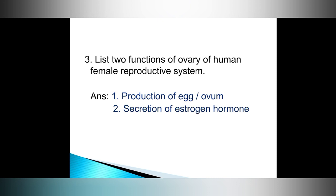Question number three: list two functions of the ovary of the human female reproductive system. Answer, number one: production of egg or ovum.